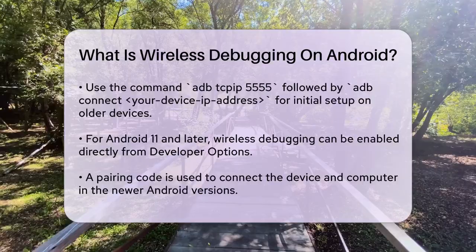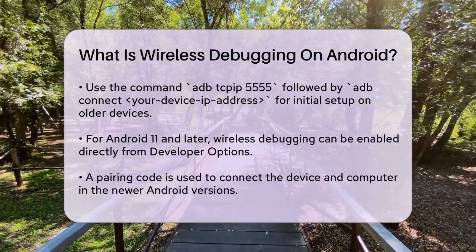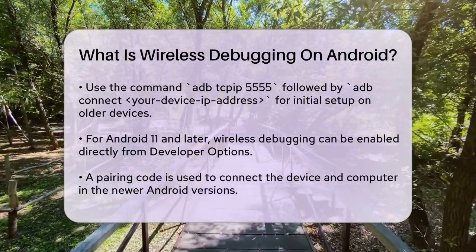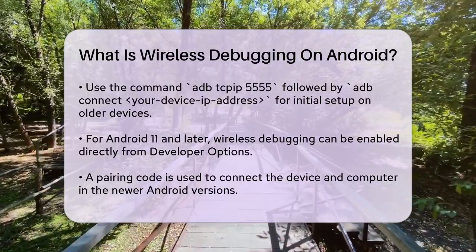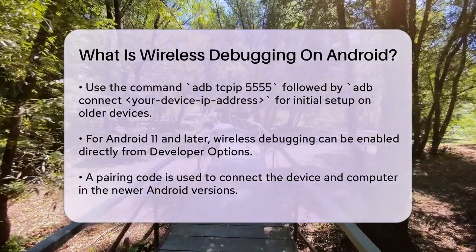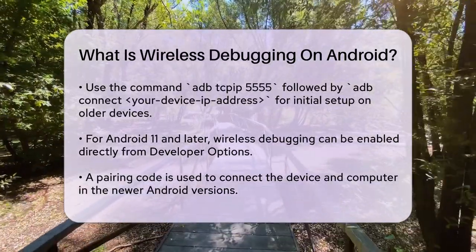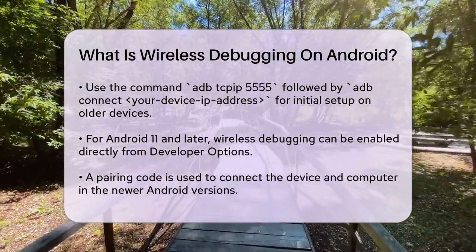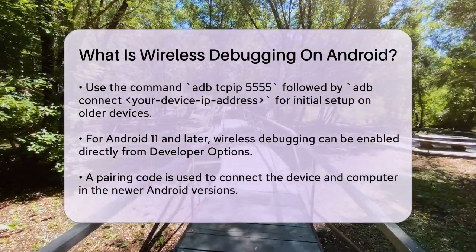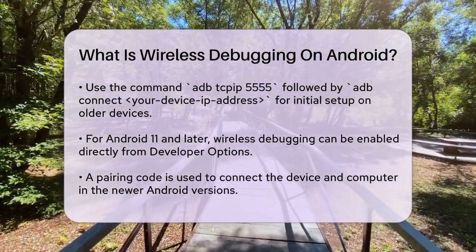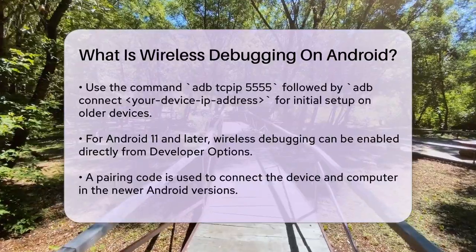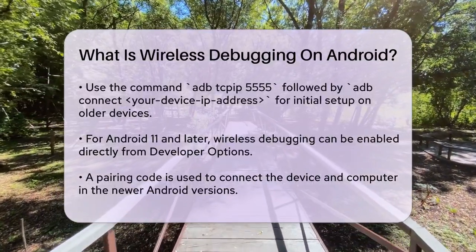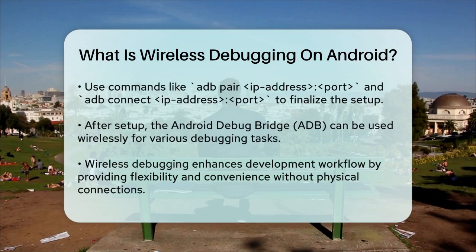For devices running Android 11 or later, the process is even simpler. You can enable wireless debugging directly from the Developer Options menu. You'll see an option to pair your device with a pairing code, which you'll enter on your computer to establish the connection. You'll use commands like ADB pair IP address port and ADB connect IP address port to complete the setup.